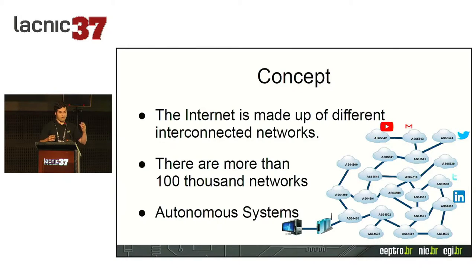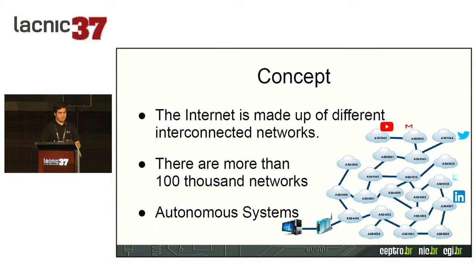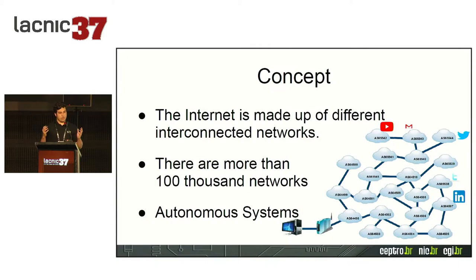Network operators always need to make quick decisions to maintain the network operational, and the tools are there to help. The Internet has over 100,000 autonomous systems. Each communicates with the others — one routes to another to create a communications path.